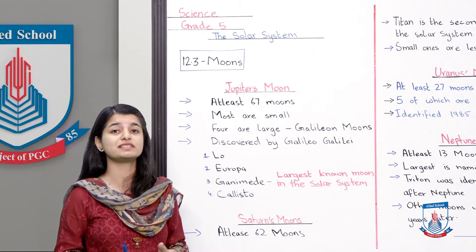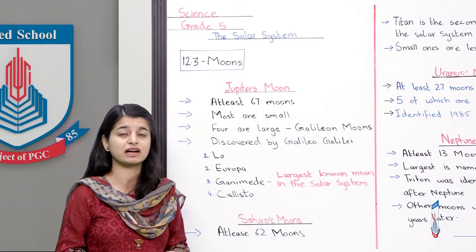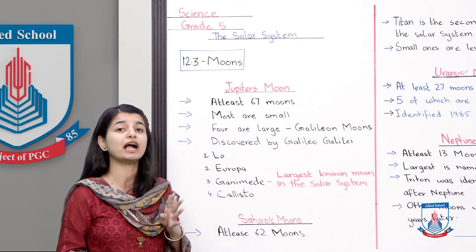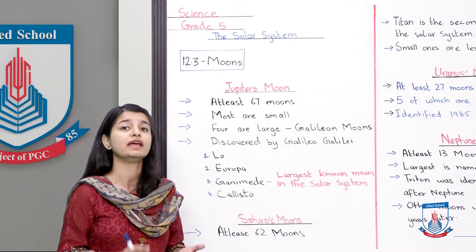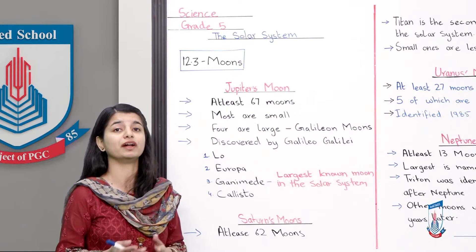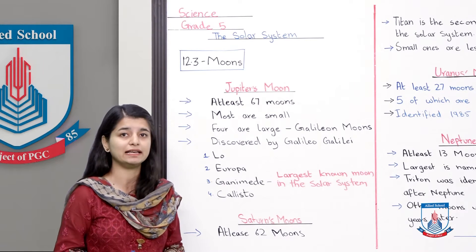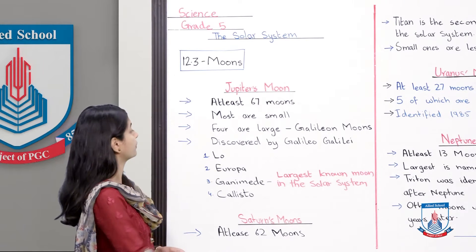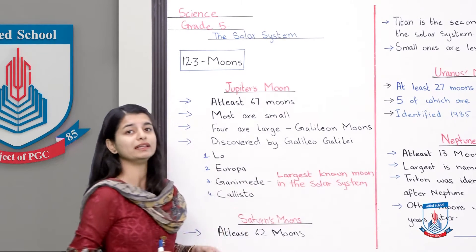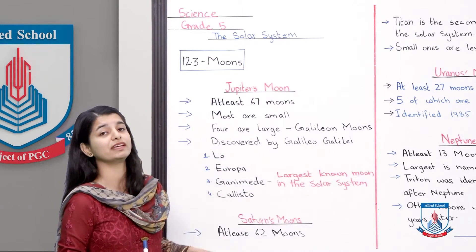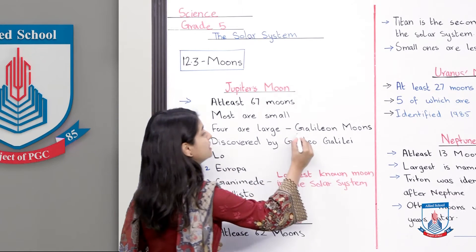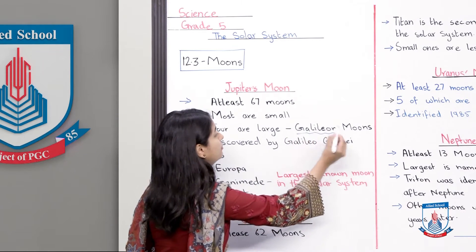Usko even father of modern science bhi kaha jata hai. He was an Italian astronomer jisne kaafi zyadha discoveries ki, aur unme se ek ye bhi thi ke usne Jupiter ke char main moons ko identify kiya tha. Iski wajah se un chaaron ko unhi ke naam pe rakh diya gaya and now they are called Galilean moons, because they were identified by him.